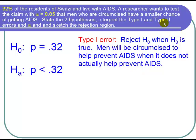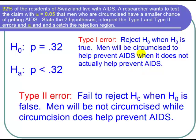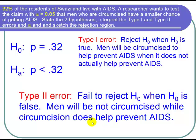A type 2 error means that we fail to reject the null hypothesis when the null hypothesis is actually false. In that case, we won't be able to say that P is less than 0.32, and we'll end up concluding that circumcision doesn't help at all. We would end up not circumcising men in Swaziland when it is true that circumcision prevents AIDS, and we'll end up having more men in Swaziland die — so that would be terrible.